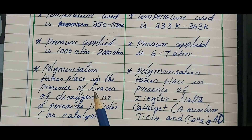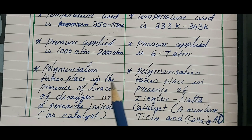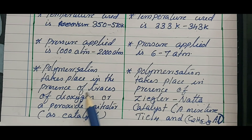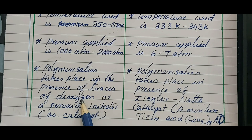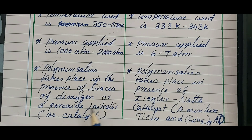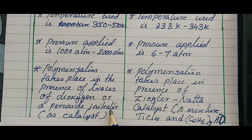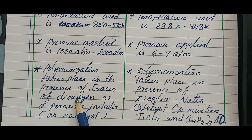Next, the preparation of both LDP and HDP requires a catalyst. In the case of low density polythene, traces of dioxygen (O₂) or a peroxide initiator is used as the catalyst. The peroxide initiator is familiar from the initiation step of the free radical mechanism of addition polymerization.